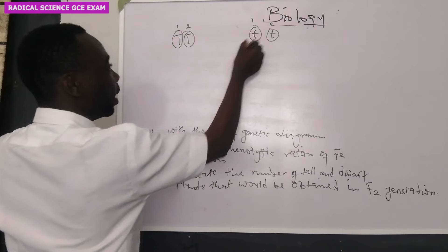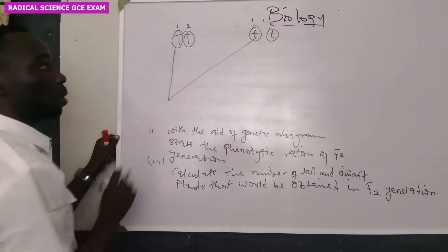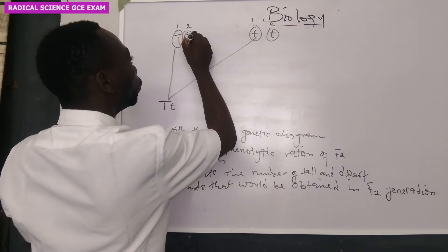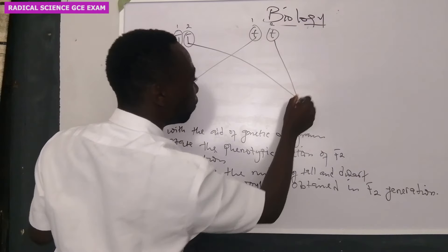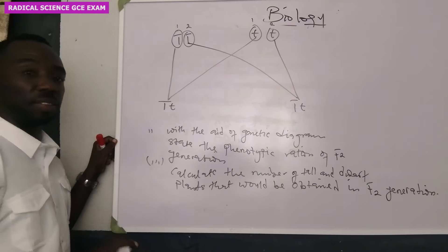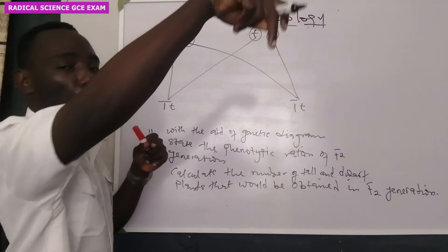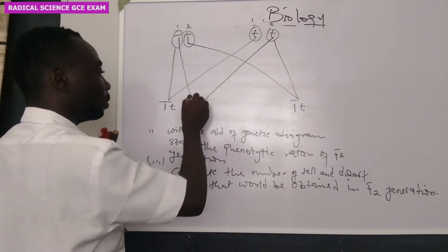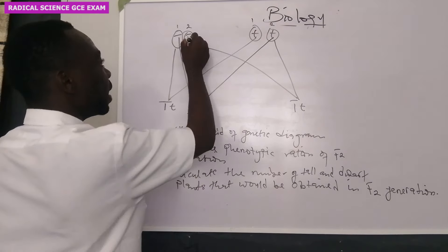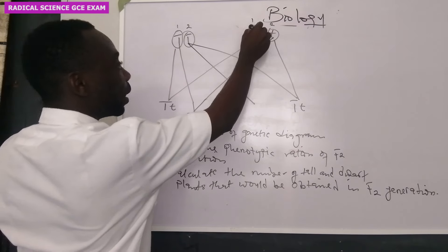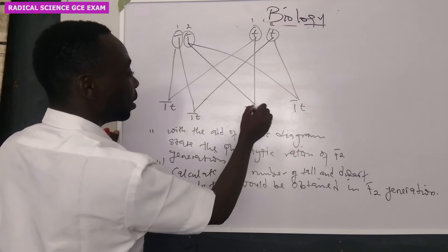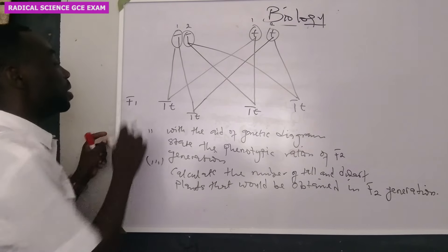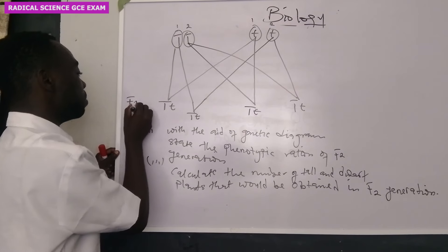Now let's do it. One is with one — you will now have capital T and small t. Then two is with two — you will now have capital T and small t. Then you come back again. Two is with one — capital T and small t. And here, two is with one — we have t and small t. So this becomes our F1. This F1 means first generation.